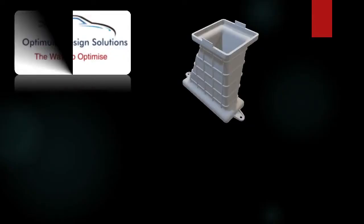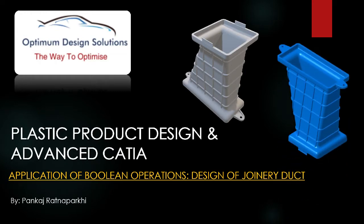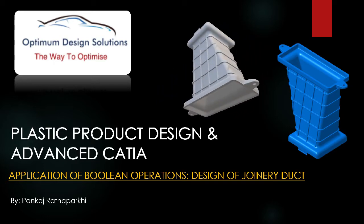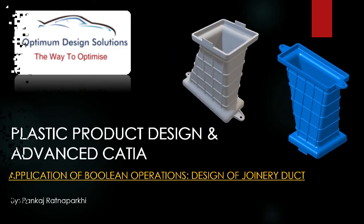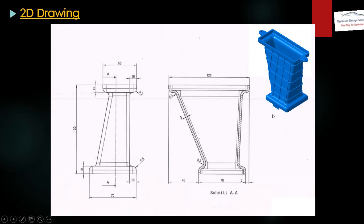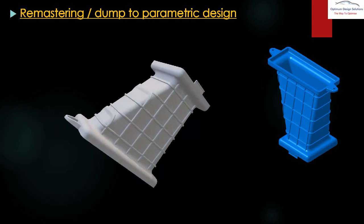Welcome to the Optimum CAT solution. I'm Pankaj Ratnaparki and we'll start our free online course on plastic product design in CATIA. Today we are moving towards the application of boolean operations, in which we are going to design a join duct. This is our 2D sketch reference drawing. Here is the section and in the 3D you can see the top mountings, at the bottom side there is a snap and additional ribs.